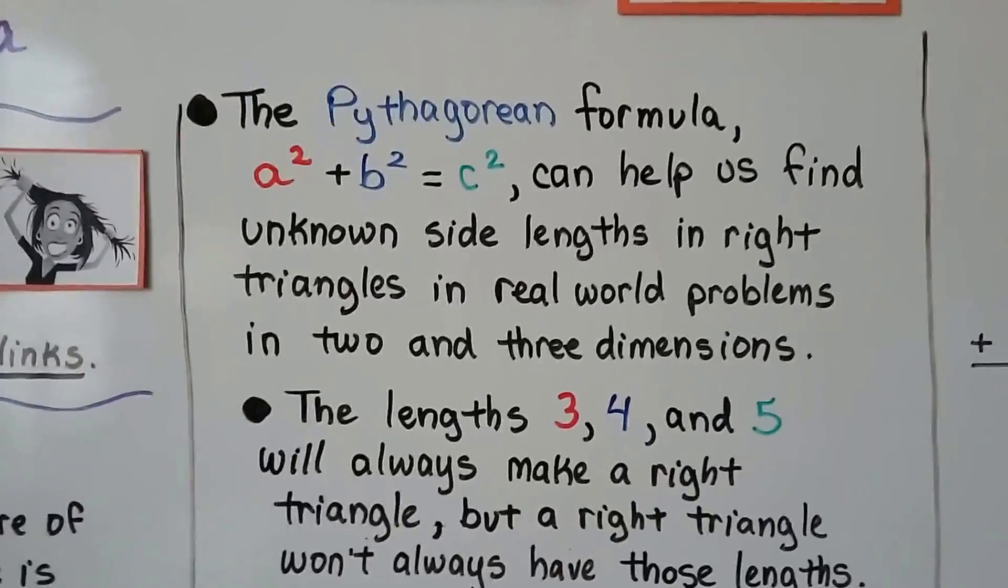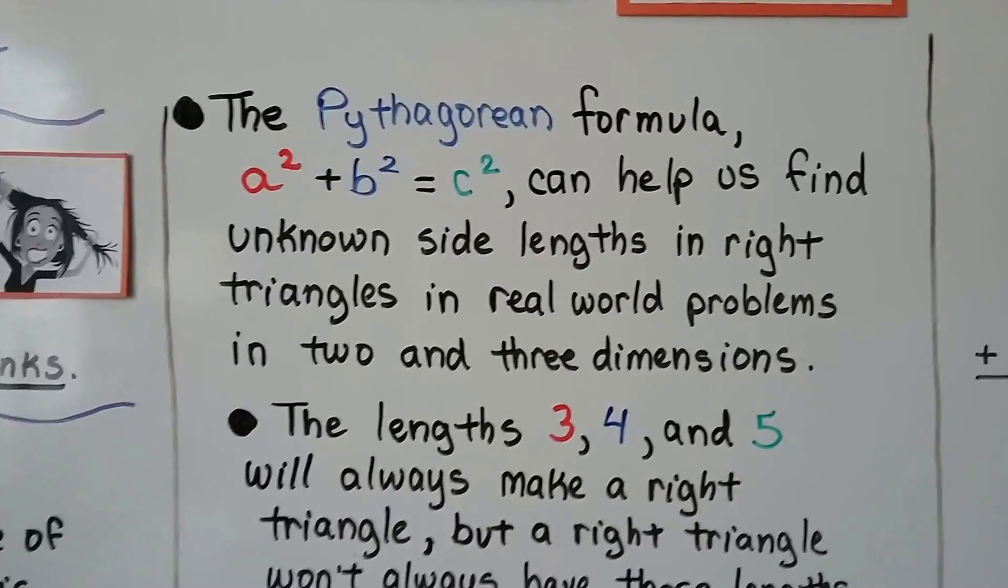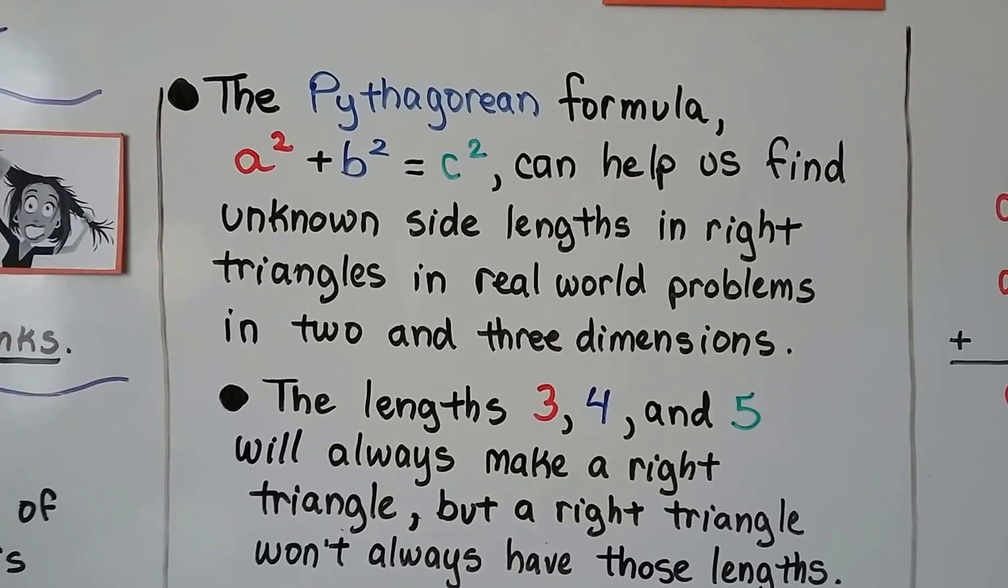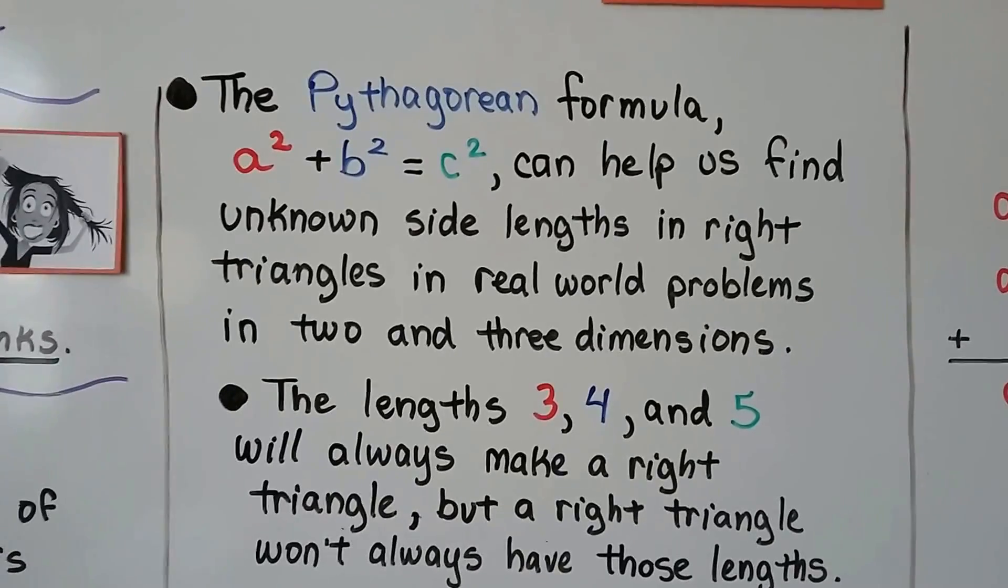The Pythagorean formula, a squared plus b squared equals c squared, can help us find unknown side lengths in right triangles, in real-world problems in 2 and 3 dimensions.